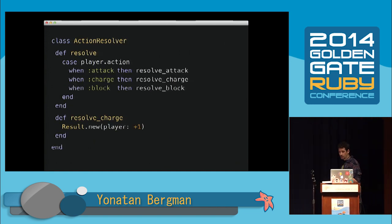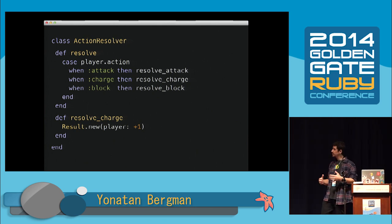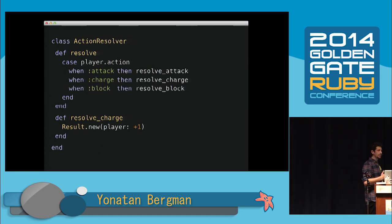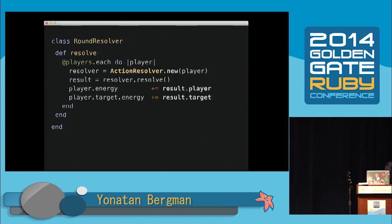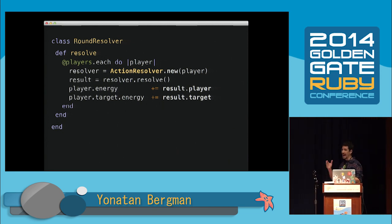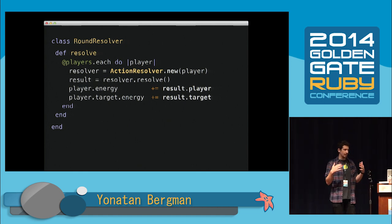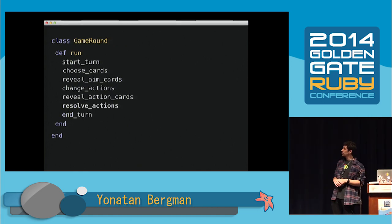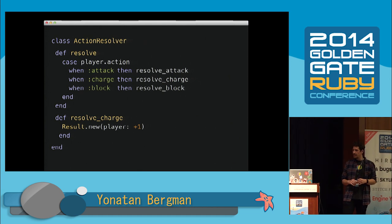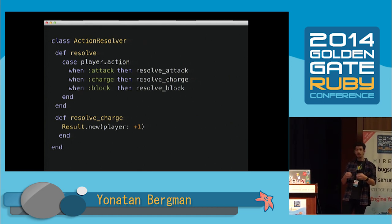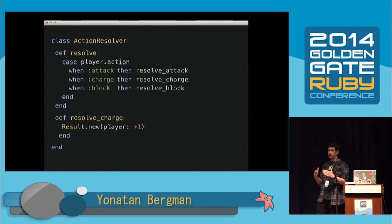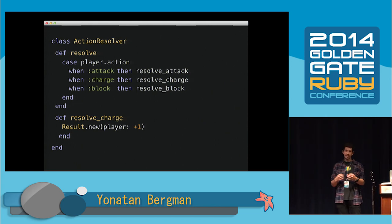My thinking was that if players are completely random, each one should win roughly the same number of times. The most important class in my code was the Action Resolver class. It receives the board state for a certain pairing of player and target, and returns the change in energy required for each of the two players. Action Resolvers were instantiated inside a Round Resolver class that resolved actions for each player and their relative targets, which in turn ran inside my Game Round class.